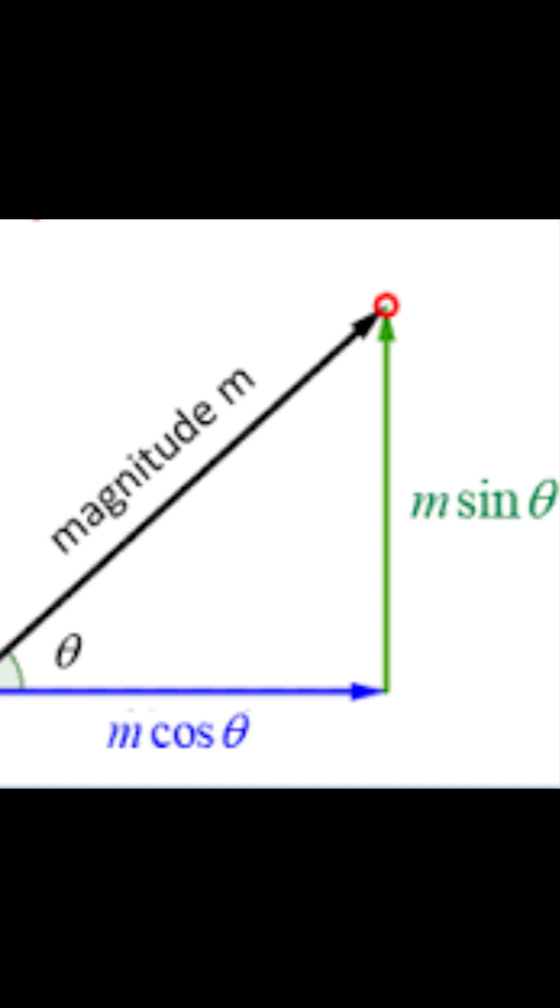If you know the magnitude and angle of your vector, v sub x equals v dot cosine of theta, v sub y equals v dot sine of theta.